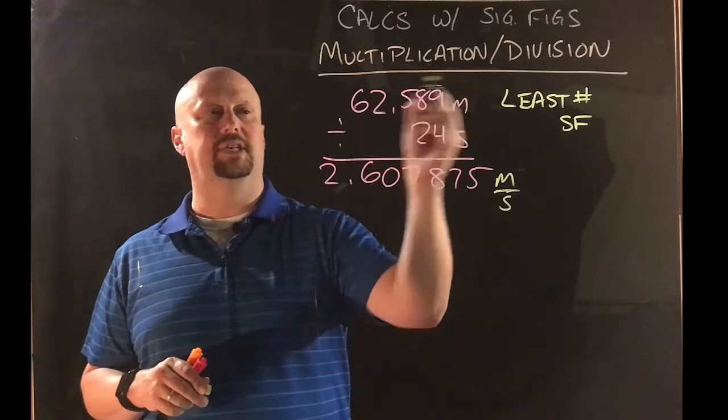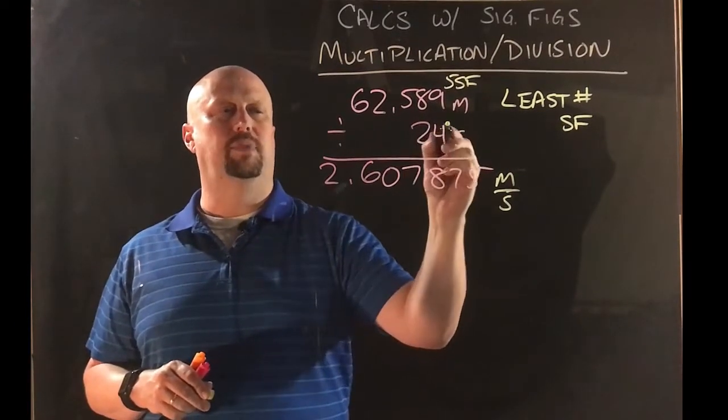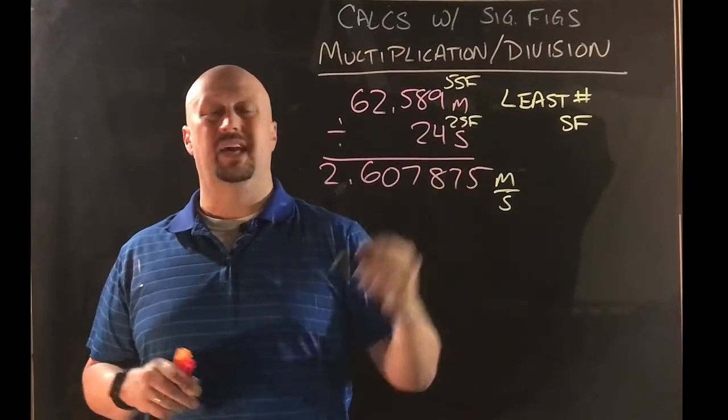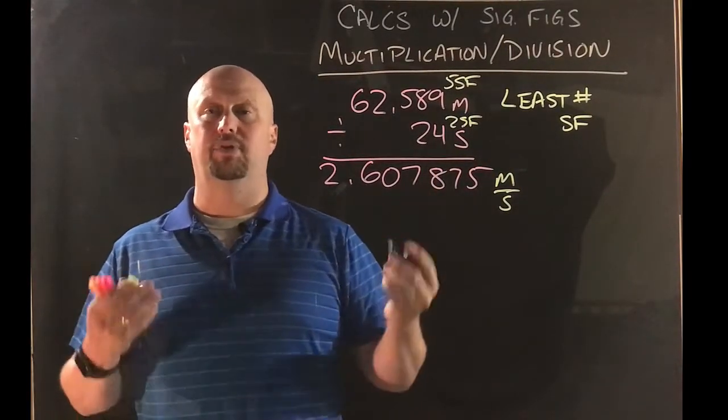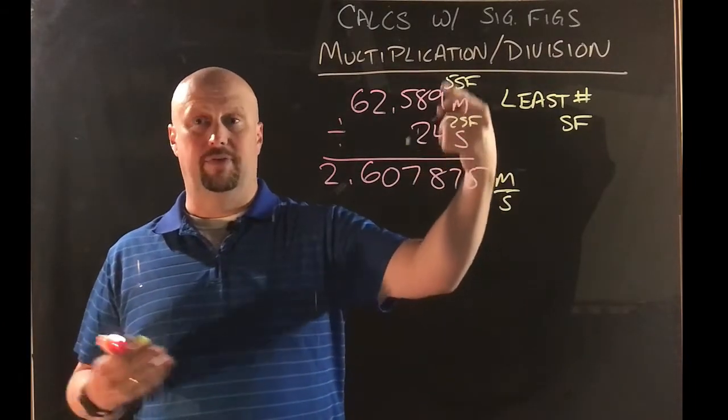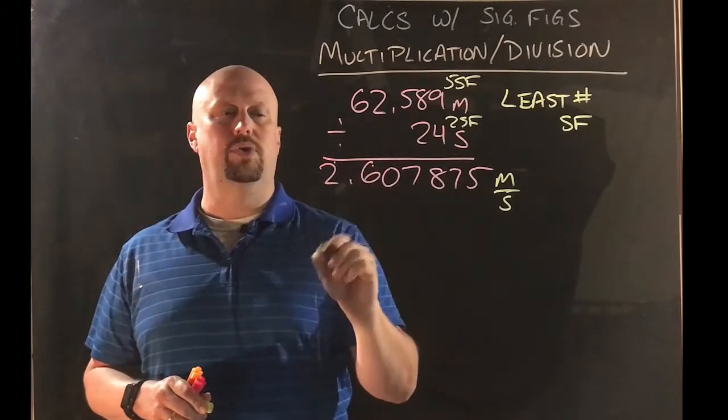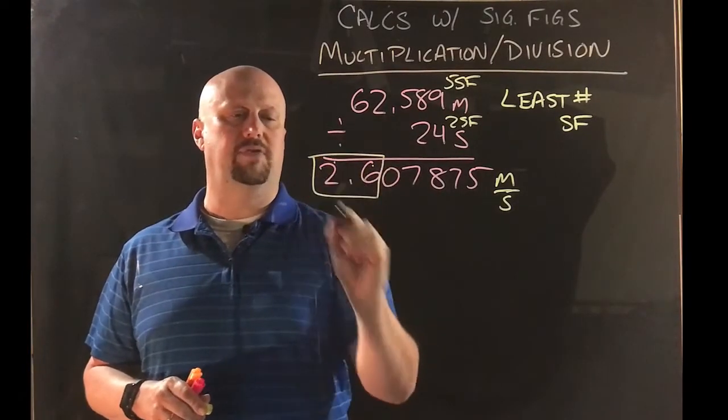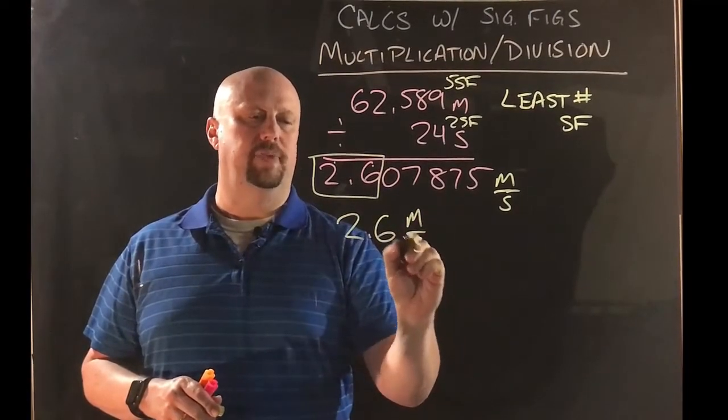So how do I know how many sig figs? Well, again, it's the least number of sig figs. This top one has five sig figs. This bottom one has two sig figs. And for any multiplication or division problem, what matters is the least number. You round to the least number. So two is lower than five. So I round to two sig figs. That gives me one, two. And so that's my two sig figs. My answer then is going to be 2.6 meters per second.